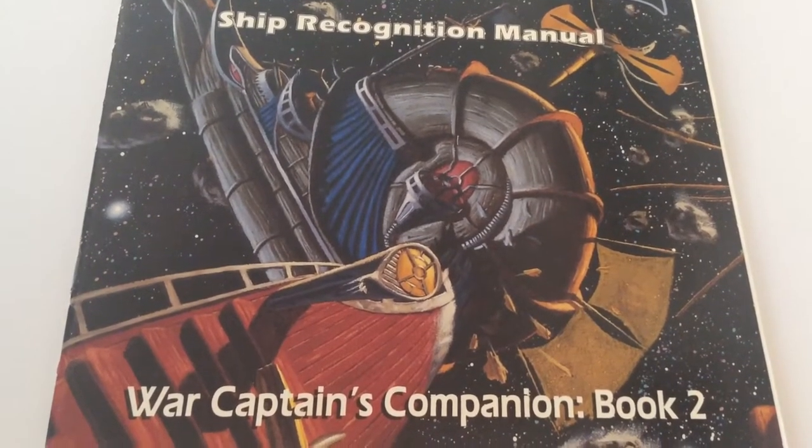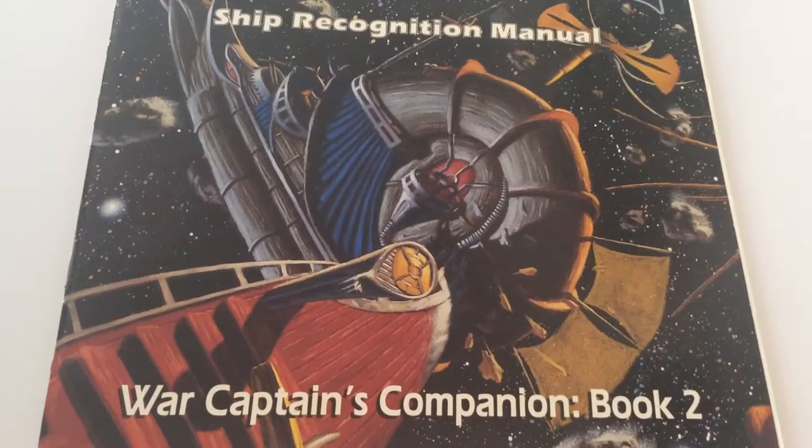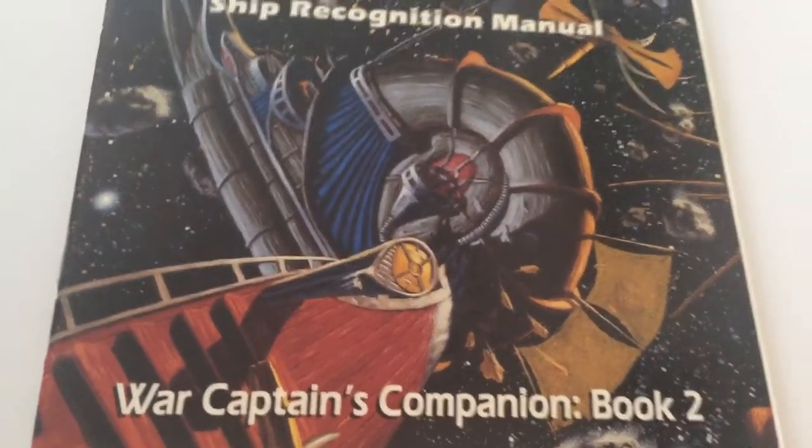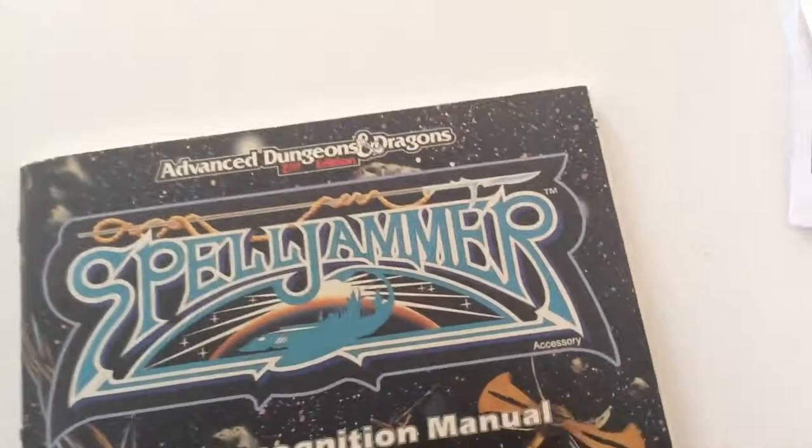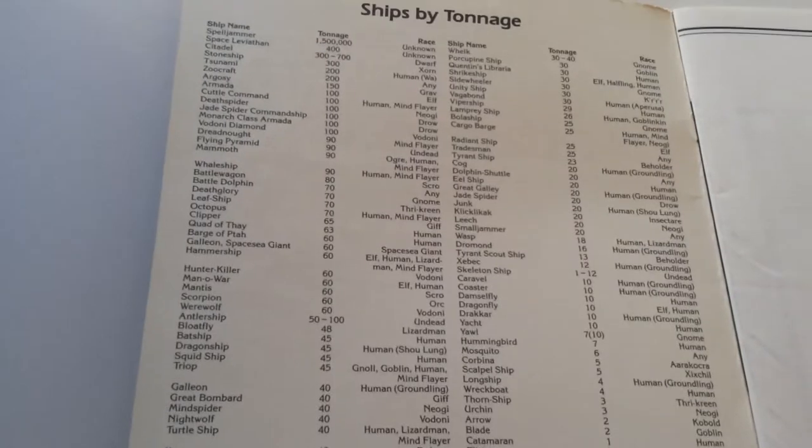Today I'm going to go over the second book in the War Captain's Companion, the Ship's Recognition Manual. This is a list of all the ships that have been published at that point.